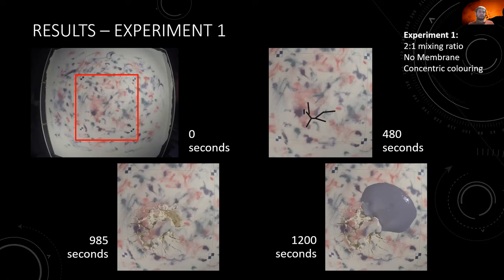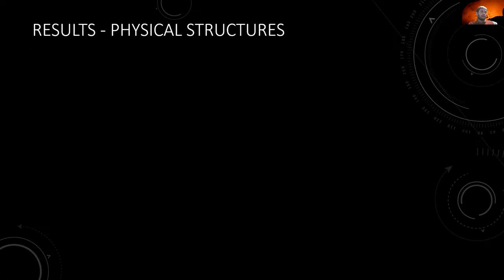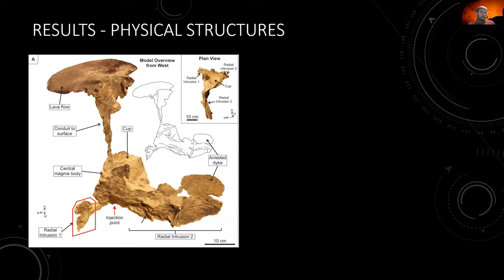After the run the experiment is left to solidify for several hours — usually overnight. It is then excavated and cleaned up. The resulting structures include the lava flow at the top surface, a radial dike system forming initially with a third radial intrusion visible alongside the other two, a central magma body with a cup-shaped upper surface and a conduit to the surface, and on rare occasions arrested dikes — dikes that form but do not propagate all the way to the surface.